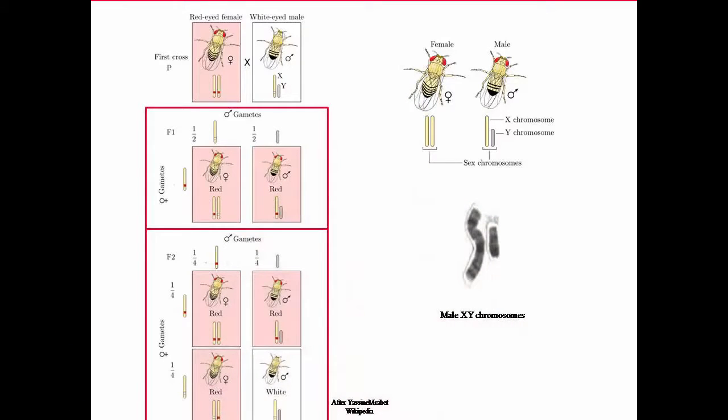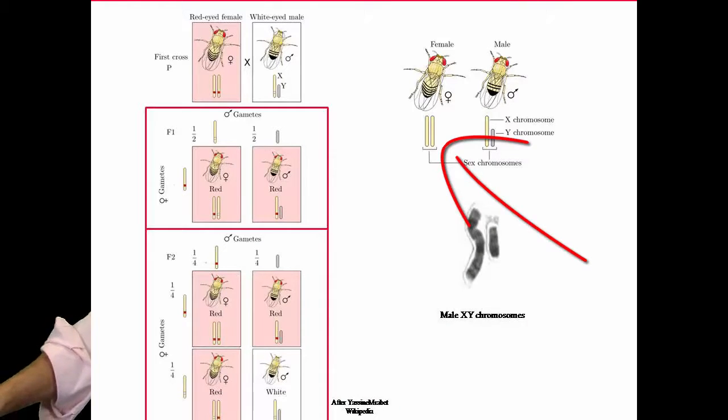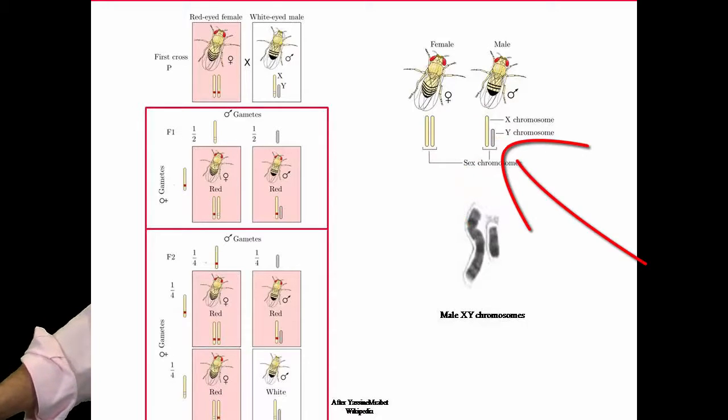And here's a picture of the real X and Y chromosomes. You can see in the flies here that in the female fly with red eyes, you've got two X chromosomes. And then in the male fly, you've got the X chromosome and the Y chromosome.